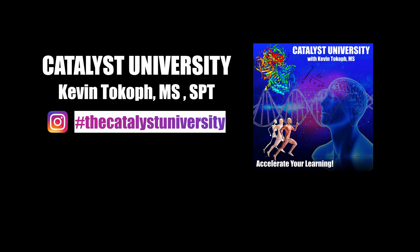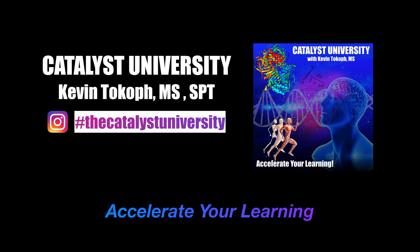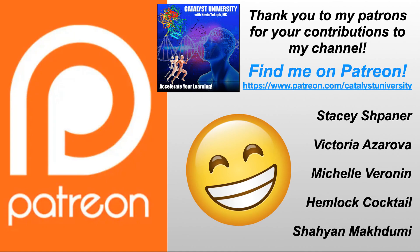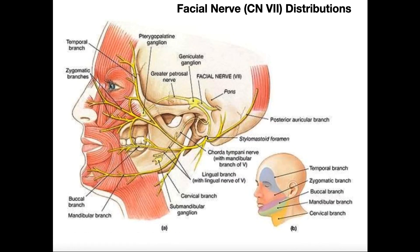Welcome back to Catalyst University. My name is Kevin Tokoff. Please make sure to like this video and subscribe to my channel for future videos and notifications, and a big thank you to my patrons on Patreon. In this video, we're going to look at the structure and function of cranial nerve 7, which is the facial nerve, and we'll also look at most of its important distributions and branches.